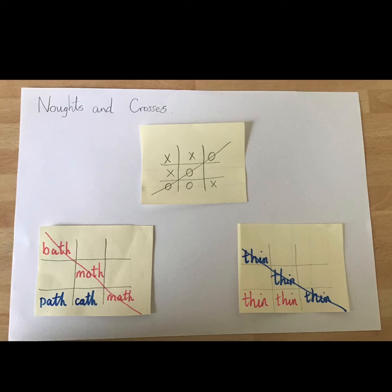All you need to play this game is a piece of paper and a couple of coloured pens or pencils. Instead of filling each box with an X or an O, write the chosen spelling word. The first person to get three words in a row is the winner and draws a line through the words. Play this game as many times as you want.